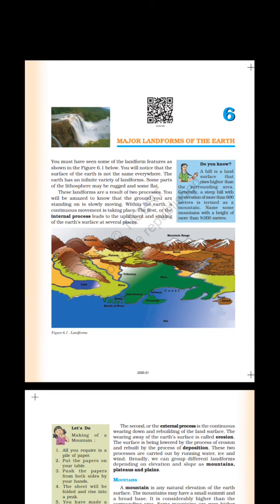Do you know? A hill is a land surface that rises higher than the surrounding area. Generally, a steep hill with an elevation of more than 600 meters is termed as a mountain. Name some mountains with a height of more than 8000 meters.